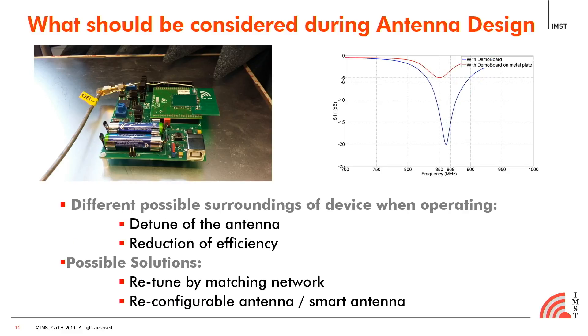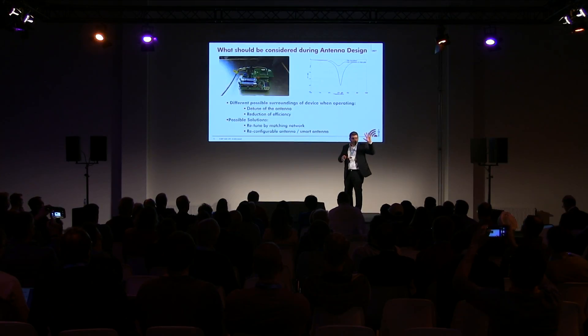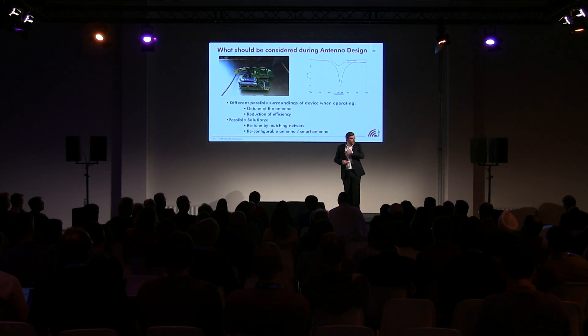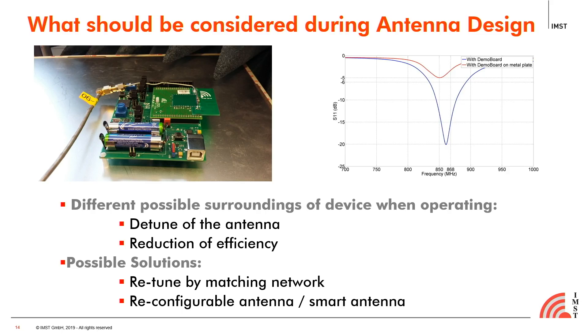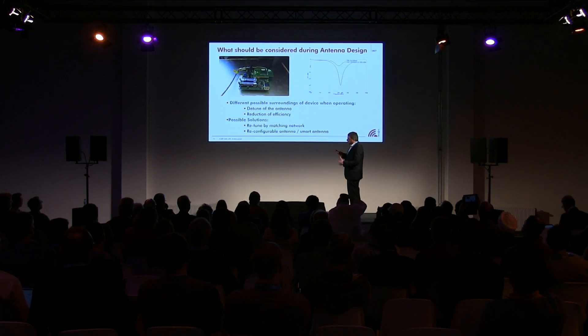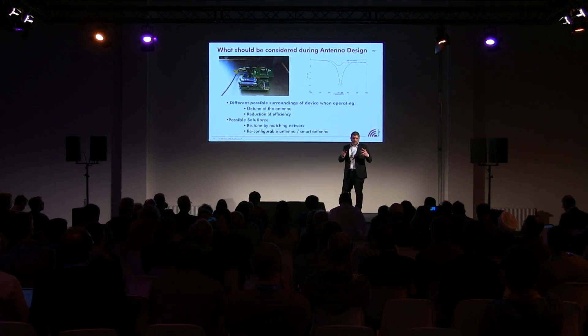Another test: I placed the whole device on top of a metal plate. How many of your devices are mounted on metal walls or columns without considering it during design? We can see clearly that the antenna, when placed on the metal plate, is completely detuned — matching is gone. The antenna is reflecting all the energy, wasting power from your battery. Again, we can retune using the matching network, or for devices used in varying surroundings, we may need a smarter solution: a reconfigurable antenna with different configurations that can adapt to the surrounding media.